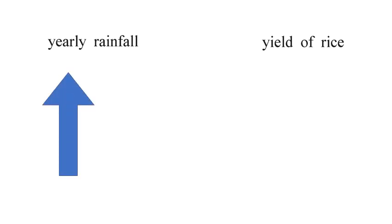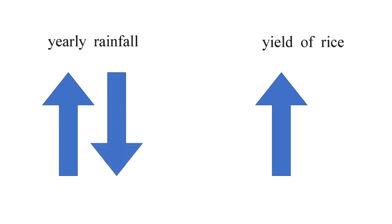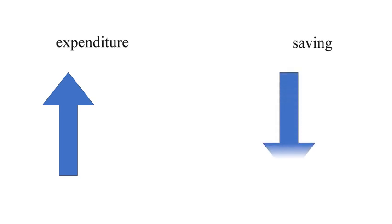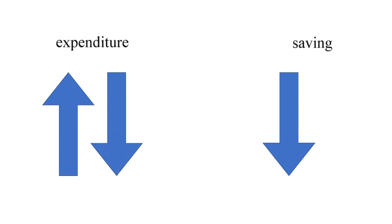Consider yearly rainfall and yield of rice: when rainfall increases, the yield of rice also increases; when rainfall decreases, the yield also decreases. In another example, when a person's expenditure increases, their saving goes down; when expenditure reduces, savings increase. These are relationships between two variables of the same data.